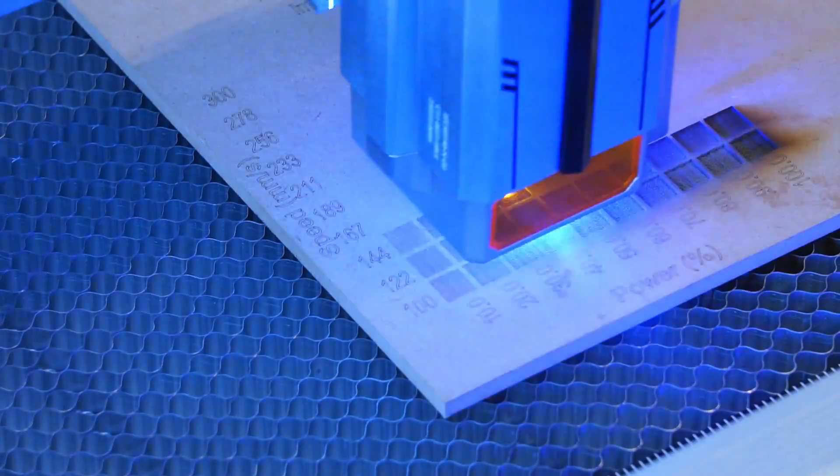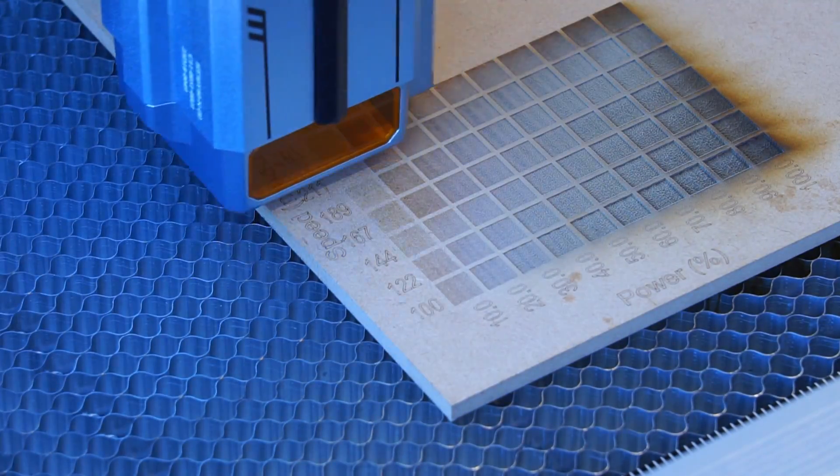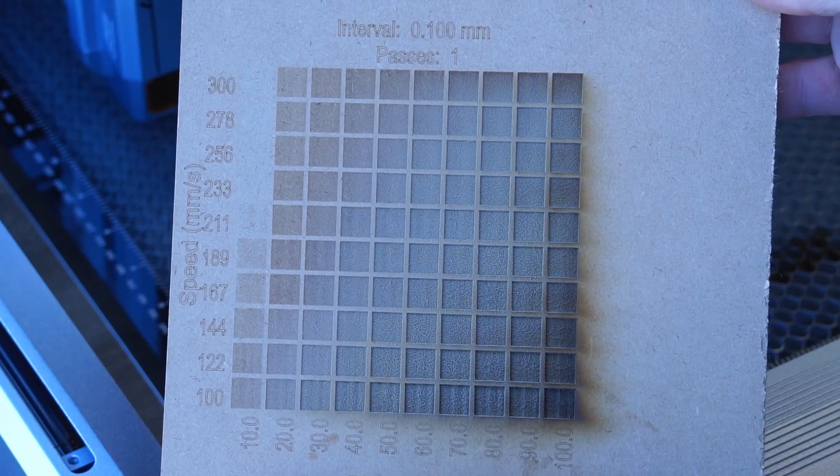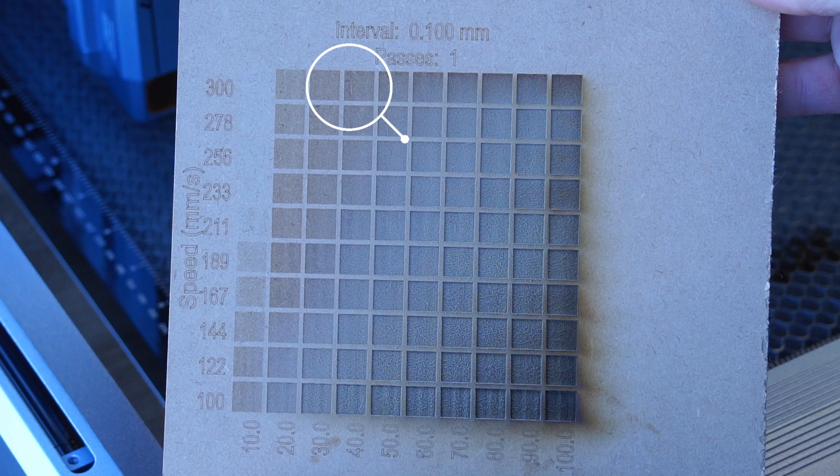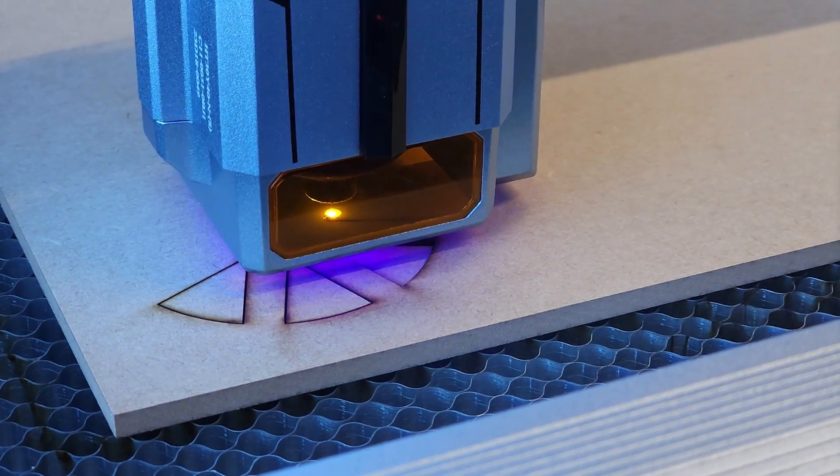Next I set up an engraving test on MDF. Based on these results you can run this machine at a rather impressive 300mm per second travel while only using 30-40% power. Now let's put these settings to use.